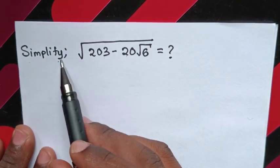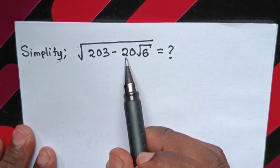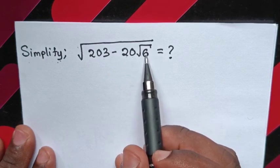Hello, how to simplify square root of 203 minus 20 square root of 6.